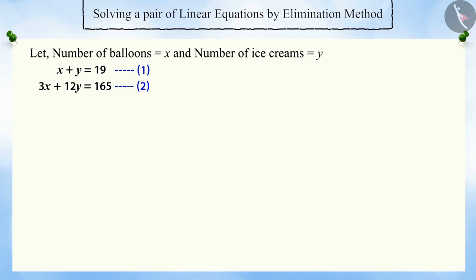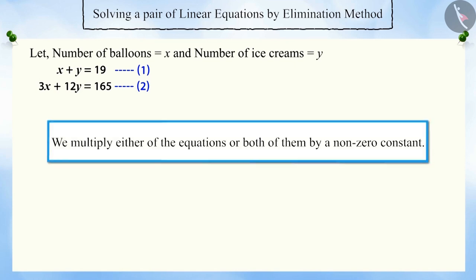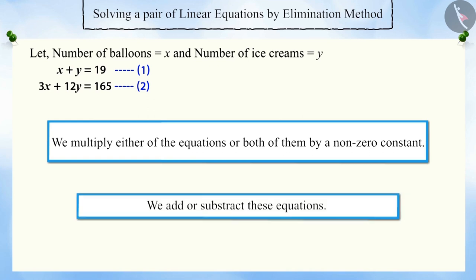First of all, let's make the coefficient value of any one of the variables, x or y, same in both the equations. For doing so, we multiply either of the equations or both of them by a non-zero constant and add or subtract them.